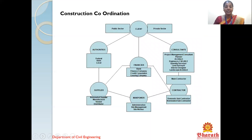In construction coordination, the client works with both public and private sectors. In the public sector flow: federal, state, or local authorities; suppliers including nominated suppliers, manufacturers, vendors, and distributors; and manpower including administration, site management, and site workers. Financial institutions include banks, finance companies, credit corporations, and leasing companies. On the client-consultant side: project management consultant, planner or architect, engineer, quantity surveyor, land surveyor, and interior designer or landscape architect. All these design and come to a conclusion on the plan, which is then handed to the main contractor for execution, along with domestic and nominated subcontractors.